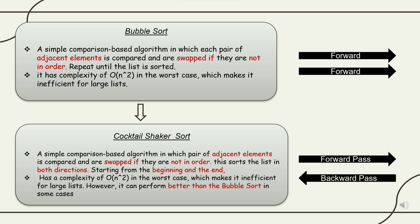While Cocktail Shaker Sort is a simple comparison-based algorithm in which pairs of adjacent elements are compared and swapped if they are not in order. It sorts the list in both directions starting from the beginning and the end. The difference is that Cocktail Shaker Sort can go forward and backward, which makes the sorting faster. It has complexity of O(n²) in the worst case, which makes it inefficient for large lists. However, it can perform better than Bubble Sort in some cases.